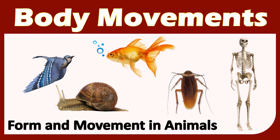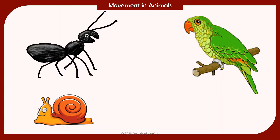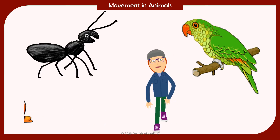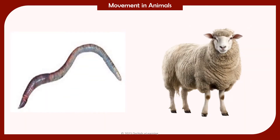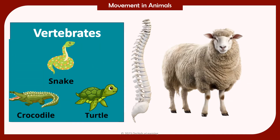Body Movements, Class 6 Science. By the end of this session you will understand about movement in animals, movement in human beings, and joints and movements. Animals show movement in many ways. The body structure of an animal directly corresponds to the way in which it moves. Based on the presence or absence of the backbone or vertebral column, animals are divided into two groups: vertebrates and invertebrates.